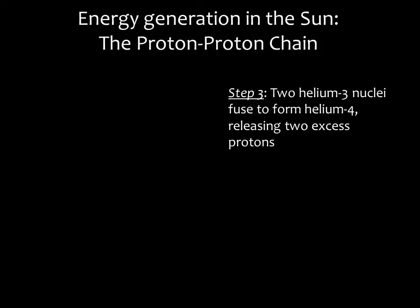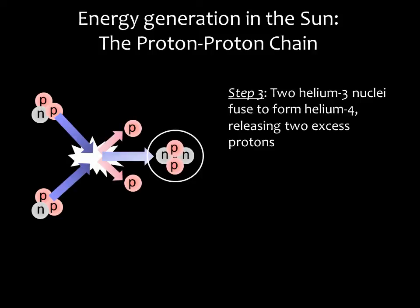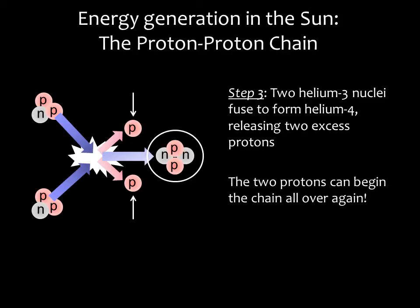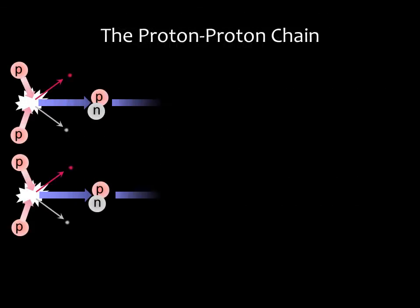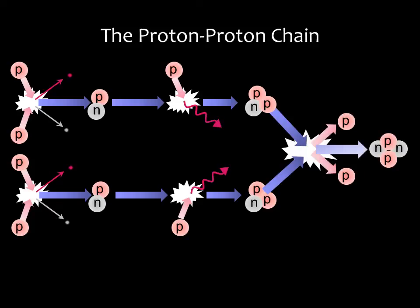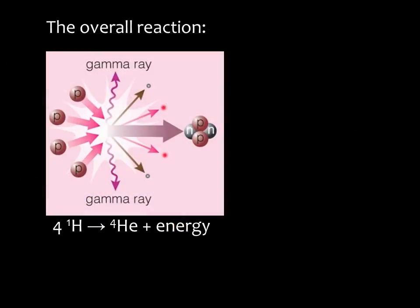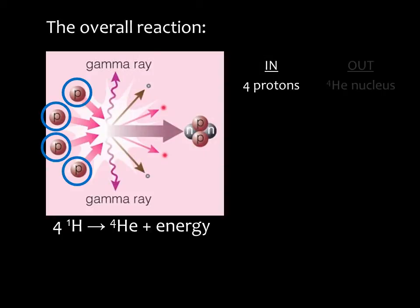In the final step, two helium-3 nuclei fuse to form helium-4, which is normal helium. We also get two excess protons, and these two protons can start the chain all over again, fusing to make deuterium. Here is the whole chain showing all of the steps. The overall reaction is four protons combining to make one helium nucleus.